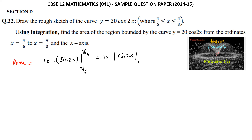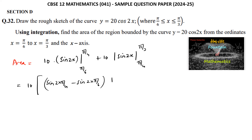Taking 10 common, the area = 10[sin2x] from π/6 to π/4 + 10|[sin2x] from π/4 to π/3|. Applying the upper limits: sin(2 × π/4) − sin(2 × π/6) and |sin(2 × π/3) − sin(2 × π/4)|.